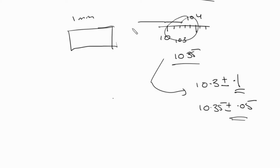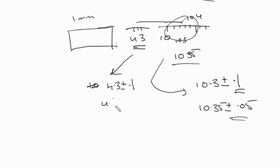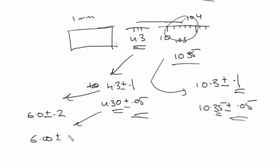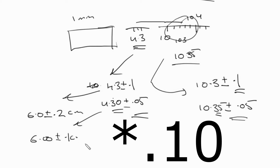When measuring the length of something, there's another reading on the other end. So say this end reads 4.3, giving 4.3 ± 0.1, or 4.30 ± 0.05. You have to always have the same number of decimal places for your absolute uncertainty. If you use one method on one end, you have to use the same one on the other end. So the total length would be 6.0 ± 0.2, or 6.00 ± 0.1 centimeters.